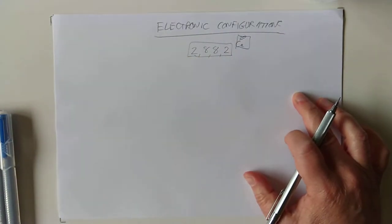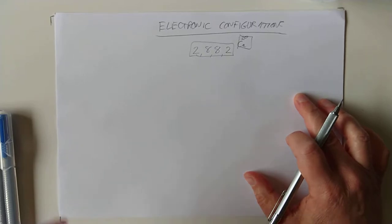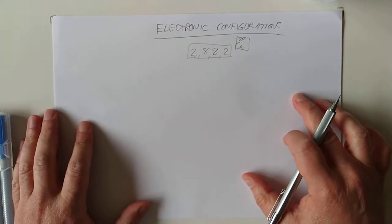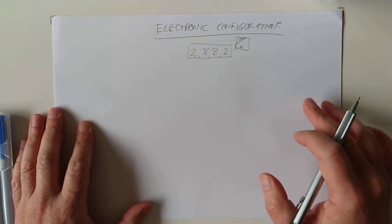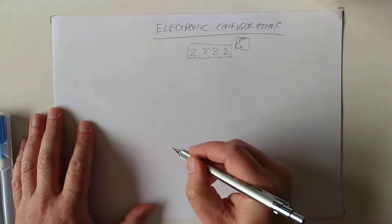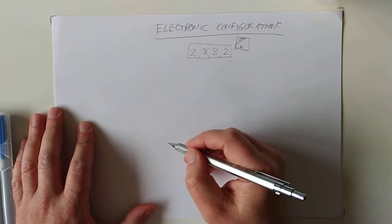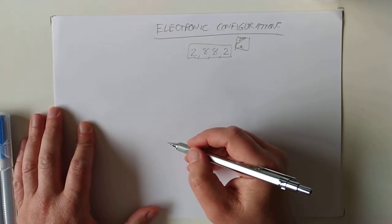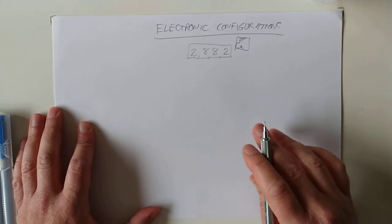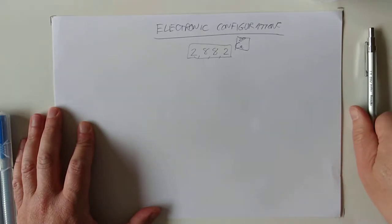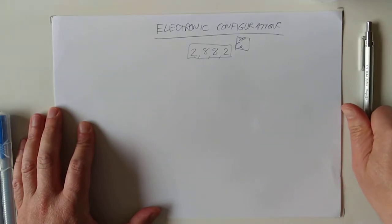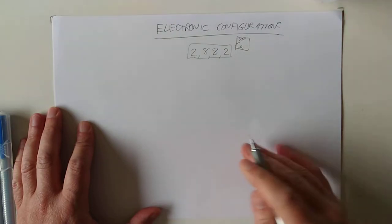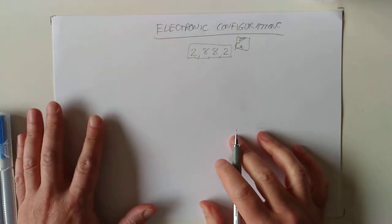I think the easiest way to do this might be to start with orbital box notation, as it's called. There are two types of notation you have to be familiar with: spectroscopic notation and orbital box notation. I think we'll start with the little boxes first.